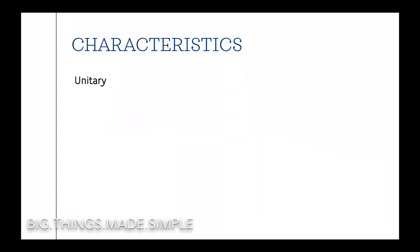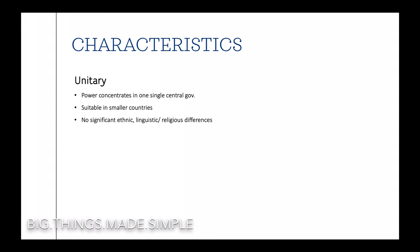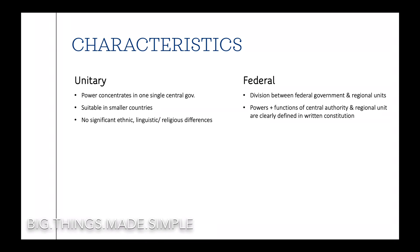In a unitary constitution, power concentrates in one single central government, like the one in the UK. This form of constitution is more suitable in smaller countries with no significant ethnic, linguistic or religious differences. Whereas in a federal constitution, there is a division between the federal government and regional units, like the states in the US and the federal government. The powers and functions of the central authority and regional units are clearly defined in a written constitution, such as in the US. The federal government does not have the right to get rid of the states, nor are the states allowed to change the constitution.